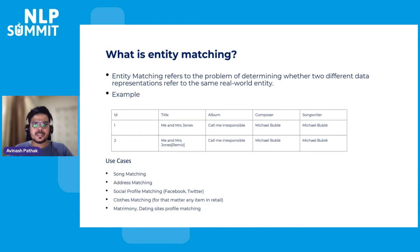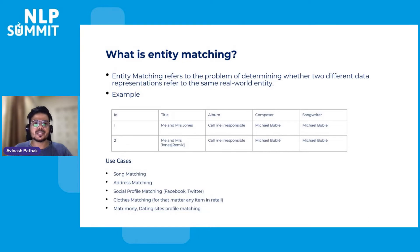So what is entity matching? You can look at the table below. You see two rows — those are nothing but two songs. The title of the first song is 'Me and Mrs. Jones'. The second one also has the same title with the word 'remix' added. So two songs are basically presented with different attributes. Anything in the real world which you can represent with different attributes is nothing but an entity. Use cases include song matching, address matching, social profile matching on Facebook or Twitter, clothes matching or any retail item, and matrimony or dating sites.